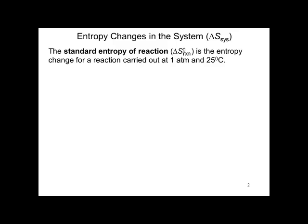Entropy changes in a system, delta S of the system, can be calculated from the standard entropy of reaction, delta S superzero reaction. It is the entropy change for a reaction carried out at one atmosphere and 25 degrees, standard conditions. Delta S superzero reaction equals C moles times S0 for component C plus D moles times S0 for component D minus A moles times S0 for component A plus B moles times S0 for component B. That is products minus reactants.